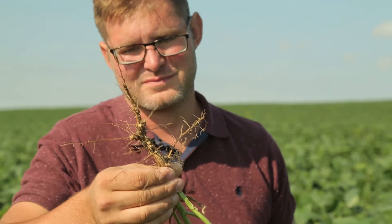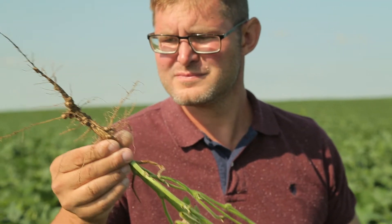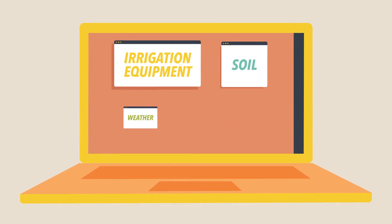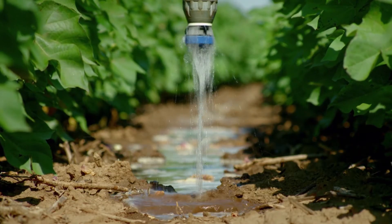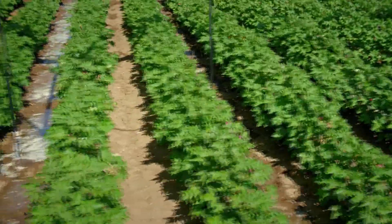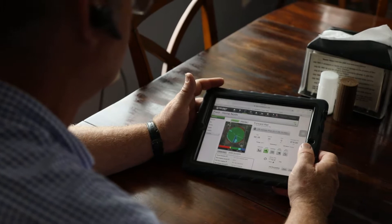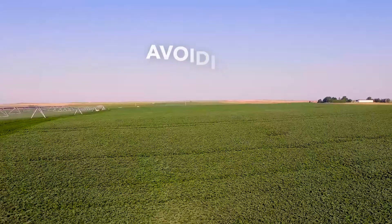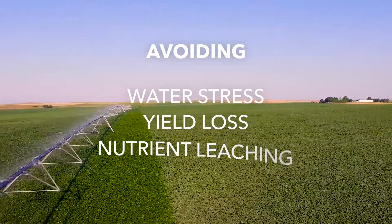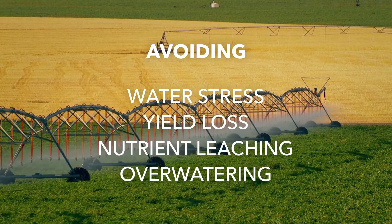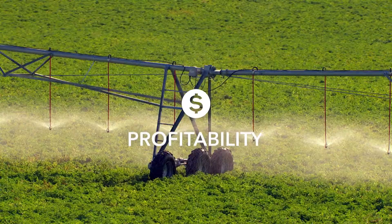You'll no longer have to rely exclusively on visual inspections of your field, use complex calculations, juggle multiple tools, or feel like you're guessing to determine when you should turn your irrigation equipment on. With FieldNet Advisor, you'll be irrigating with confidence this season — saving time with quick and easy-to-understand irrigation recommendations and alerts, avoiding crop water stress, yield loss, and nutrient leaching, and eliminating over-watering, saving related input costs, and helping to maximize your field's profitability.